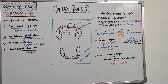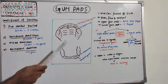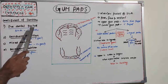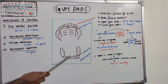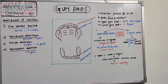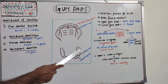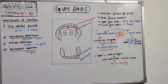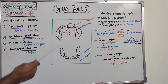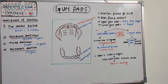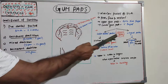Gum pads refer to the structure present in the pre-dentate period — from birth to eruption of the first deciduous teeth in the oral cavity, that is the lower central incisor. Gum pads are the alveolar arches of an infant. They are very firm, pink, and resilient, and basically have two parts: the labio-buccal portion and the lingual portion.